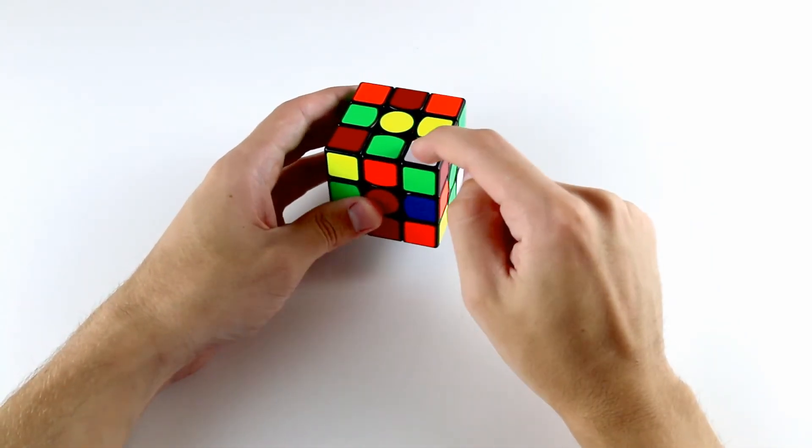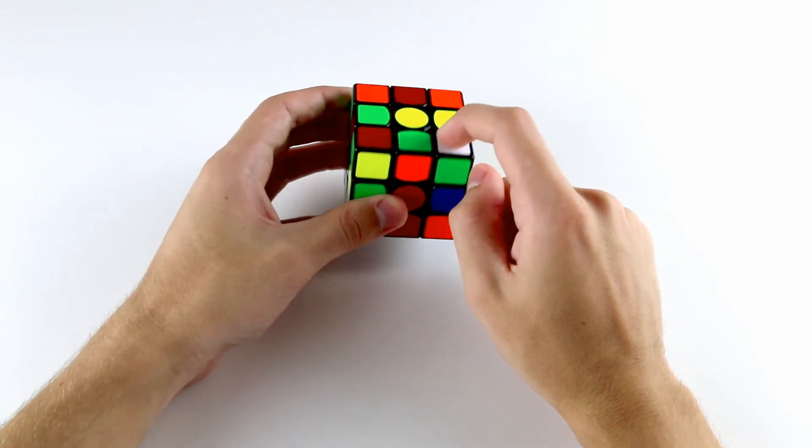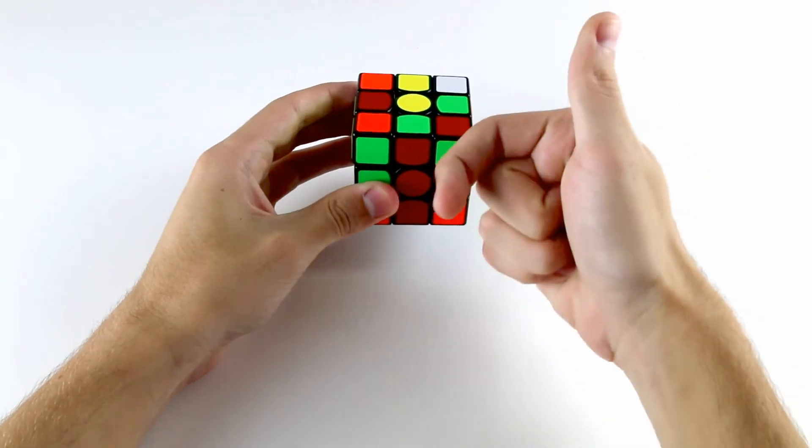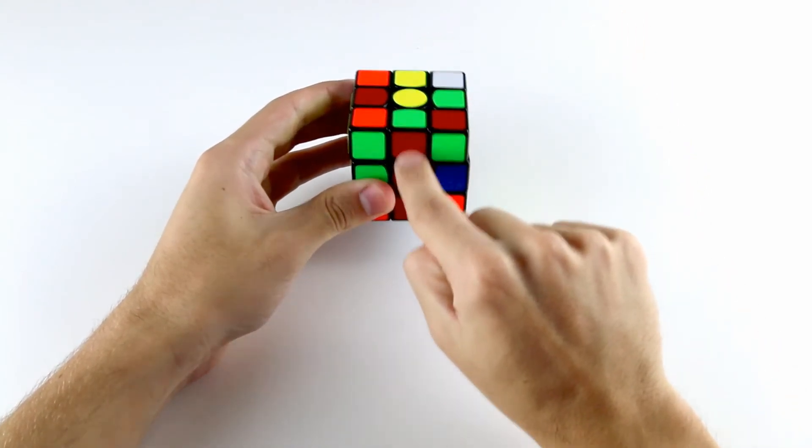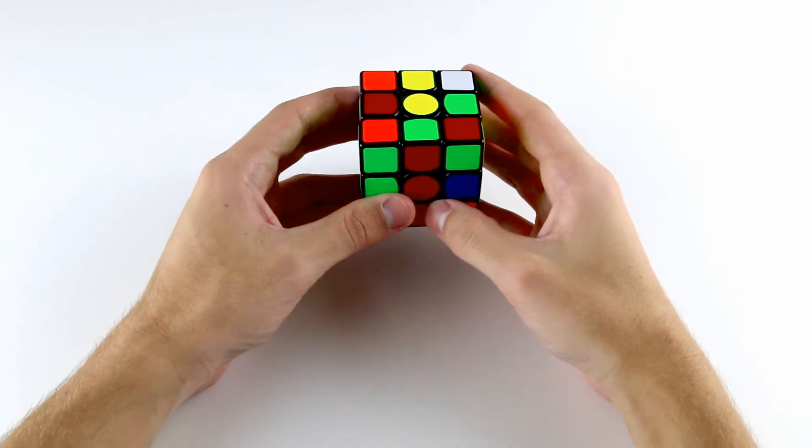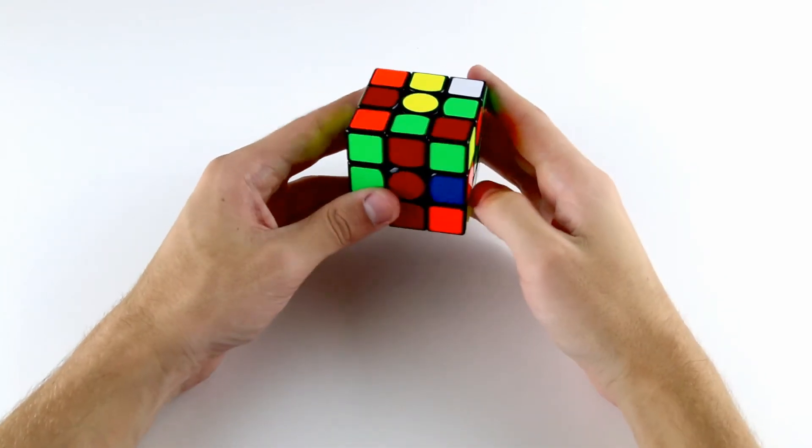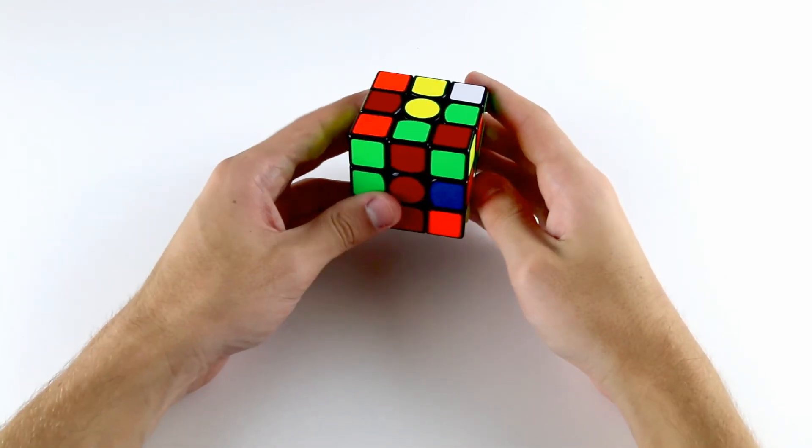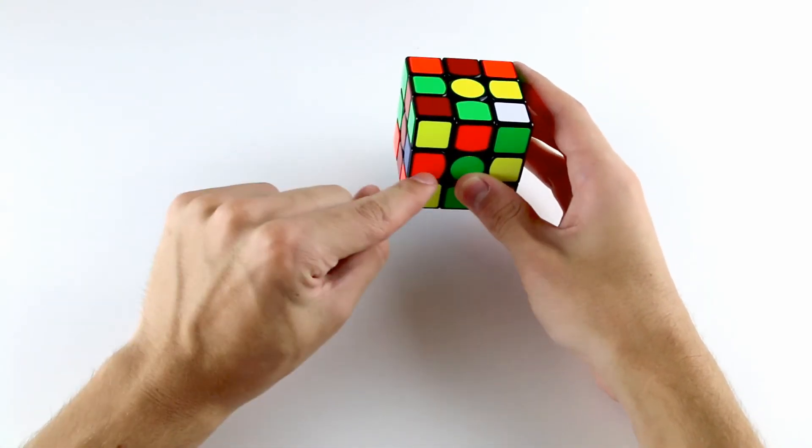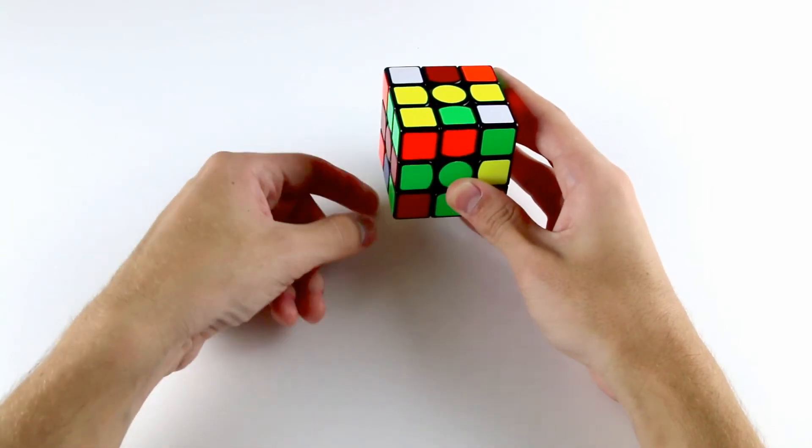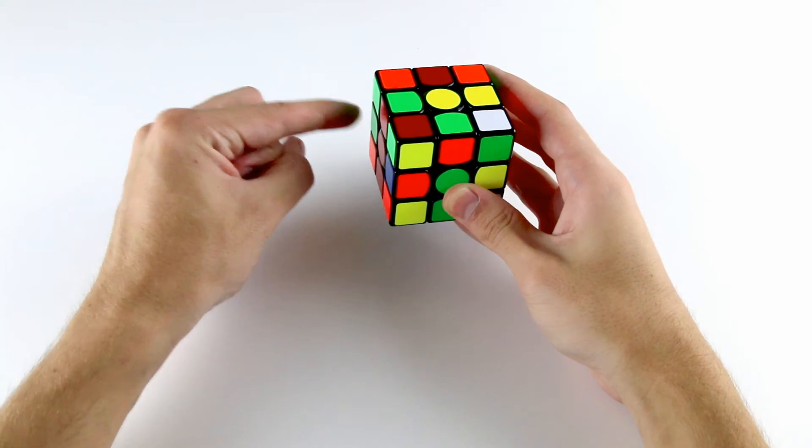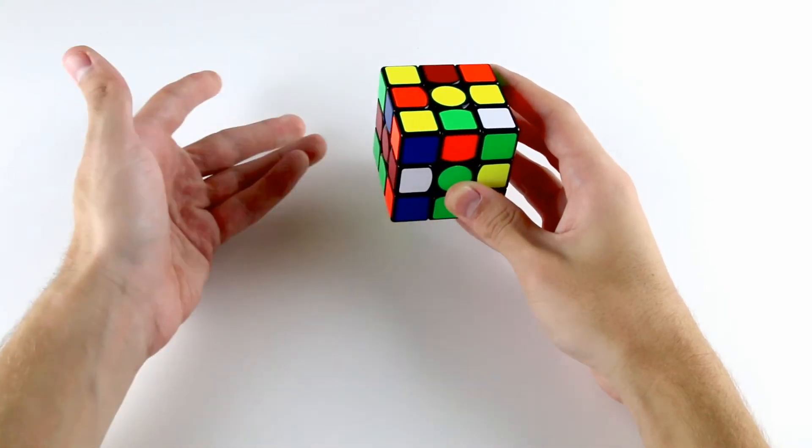Now we still have the same case where the white sticker on the corner is facing upwards. So what we do is we move the edge piece so that the sticker facing outwards, not upwards, is aligned with the corresponding center like we did before. Now we need to figure out which way to hide this edge. Remember we need to hide it in the direction away from the slot where it needs to go. This edge needs to go into this slot, so we can't hide it like this. We need to hide it away from this slot, back here.